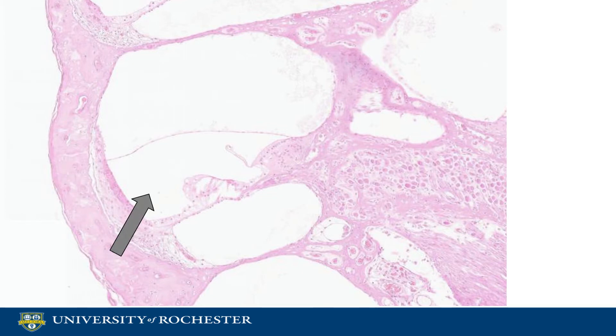This is the cochlear duct. It is an endolymph-filled cavity. It is separated from the tympanic duct by the basilar membrane and the organ of Corti.